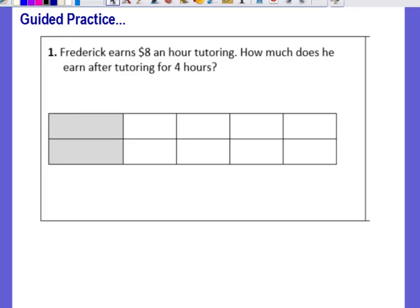We're going to begin with our guided practice. Frederick earns eight dollars an hour tutoring. How much does he earn after tutoring for four hours? You'll note that our table is an empty table. That means we need to set up our labels, put in our given rate or ratio, and then solve for our unknown.